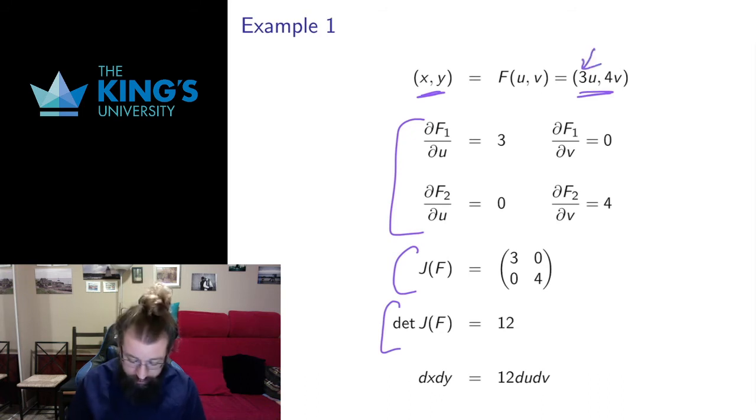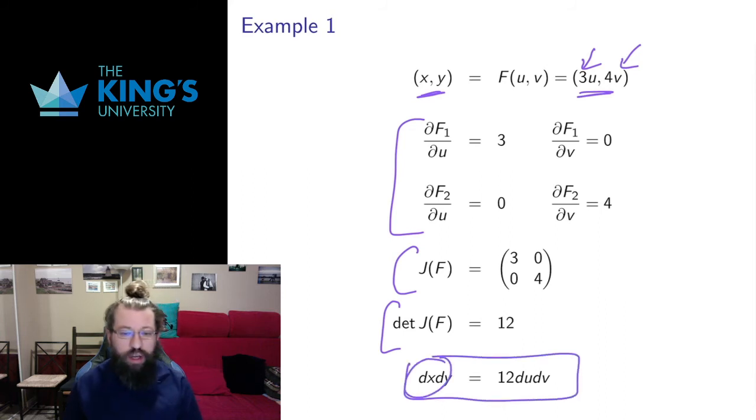And that makes sense because I'm dilating in one direction by 3, I'm dilating in another direction by 4. So the total effect on area should be an effect of 12. And that's how you should interpret this, is that the infinitesimal area dy dx in the old variables is equal to 12 times the infinitesimal area du dv in the new variables.